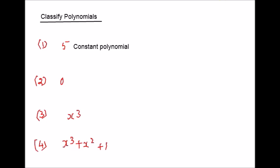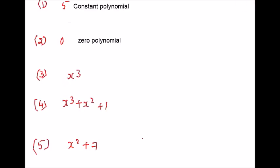Please look at question number two. We just have a number that is zero. It is not a negative number, not a positive number. So you can say this as zero polynomial. Now let's move on to question number three. In this, we have only one term — a variable, not a constant number. So when there is only one term in the expression, we say that this is a monomial.